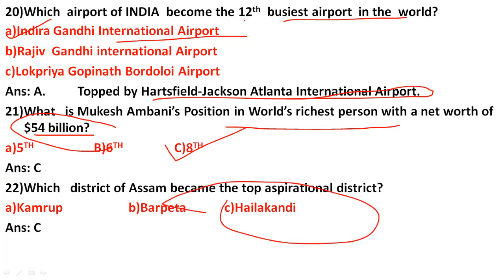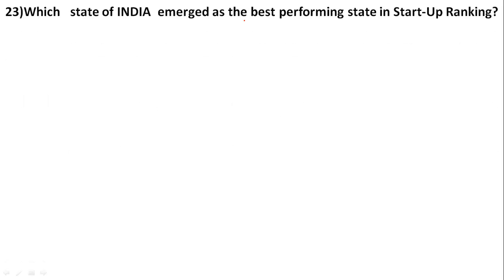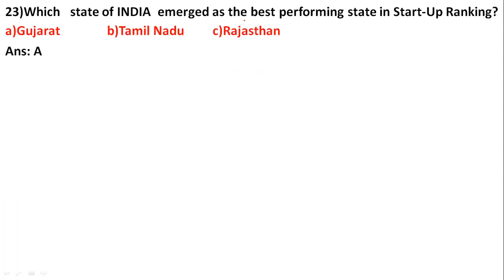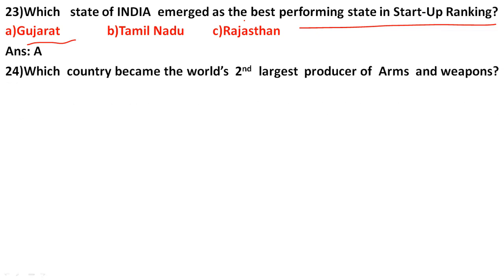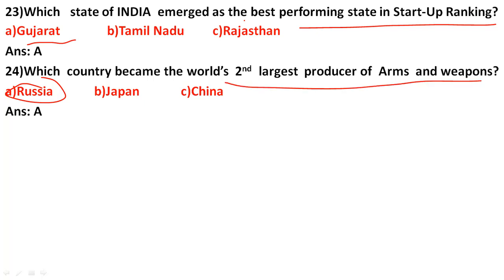Which state of India emerged as the best performing state in the Startup Ranking? The options are Gujarat, Tamil Nadu, and Rajasthan. The correct answer is Gujarat — best performing in startups. Which country became the world's second largest producer of arms and weapons? The options are Russia, Japan, and China. The correct answer is option A: Russia.